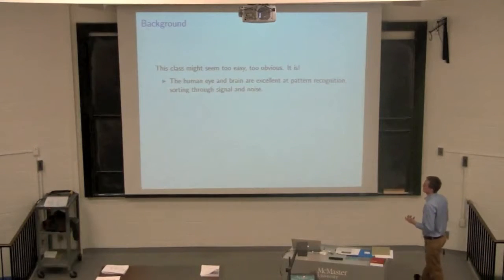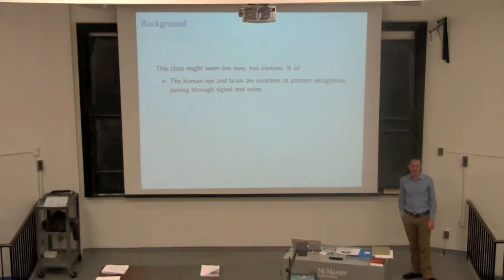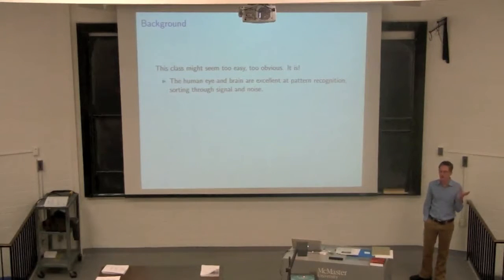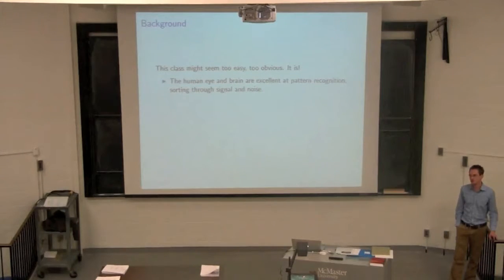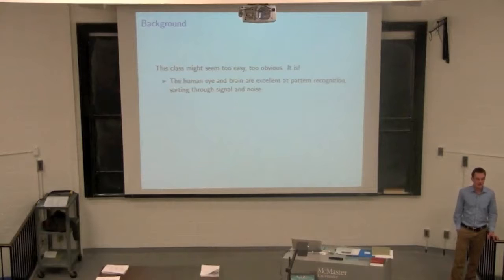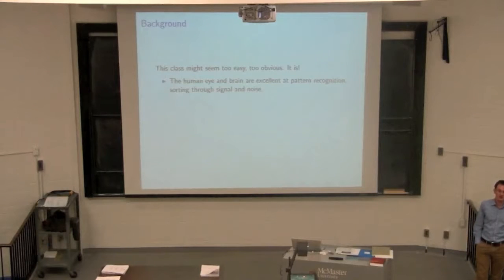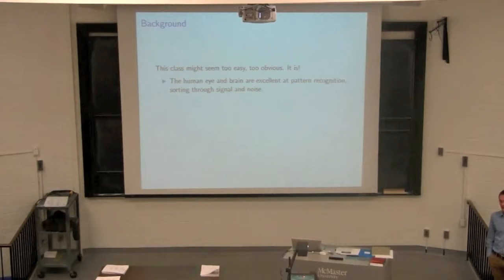It seems easy — almost too obvious, some of the things I'm talking about. That's because our brains and eyes are so hardwired for graphical data. We're always looking around, processing gigabytes of data every minute just from our visual input. We're excellent at figuring out what is noise and what is signal, what is a pattern. For two or three years I worked in multivariate image analysis, writing computer programs that would, in real time, use cameras and process data from them.